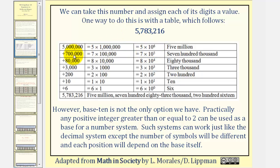The 7 represents 7 times 100,000, which we can also write as 7 times 10 to the fifth, and so on. To determine the value of each position or place value, we take our base 10 starting with 10 to the zero, which gives us 1, and then increase the exponent by 1. 10 to the first gives us the tens place value, 10 to the second gives hundreds, 10 to the third gives thousands, and so on.